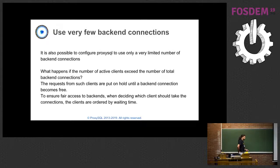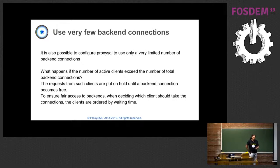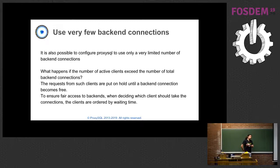One of the misconceptions people normally make when configuring ProxySQL is that they configure the number of backend connections to be as high as the number of client connections. So if they expect 1,000 client connections, they configure ProxySQL to open up to 1,000 connections to the database server. In reality, this is something you should not do - you should always configure ProxySQL to open way fewer connections to the database server.